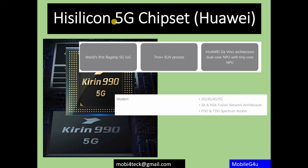HiSilicon is Huawei's chipset brand. The Kirin 990 5G uses a 7nm process and supports 2G, 3G, 4G, and 5G with SA and NSA modes, FDD and TDD spectrum access. While the underlying technology across chipset vendors is similar, the difference lies in how well they develop it and the capability of their developers. This is the HiSilicon 5G chipset from Huawei.